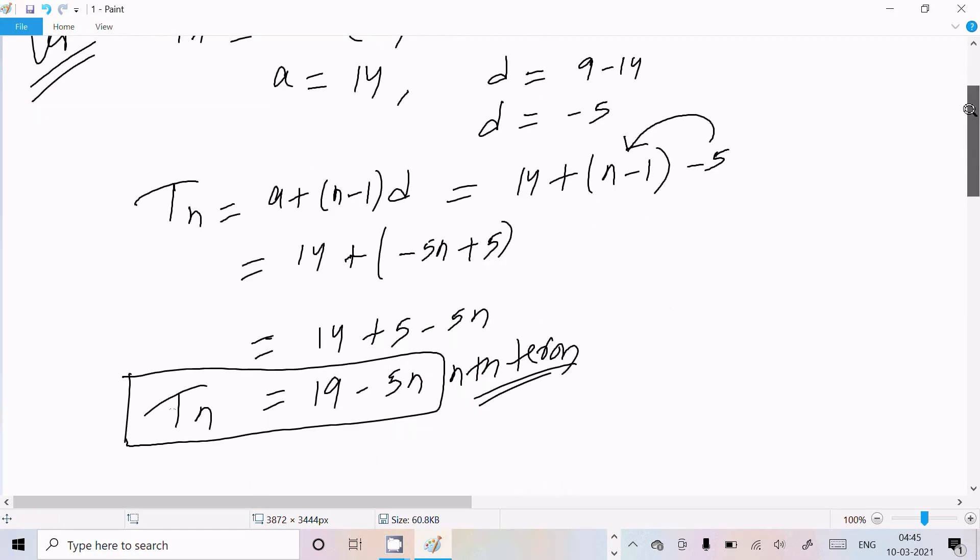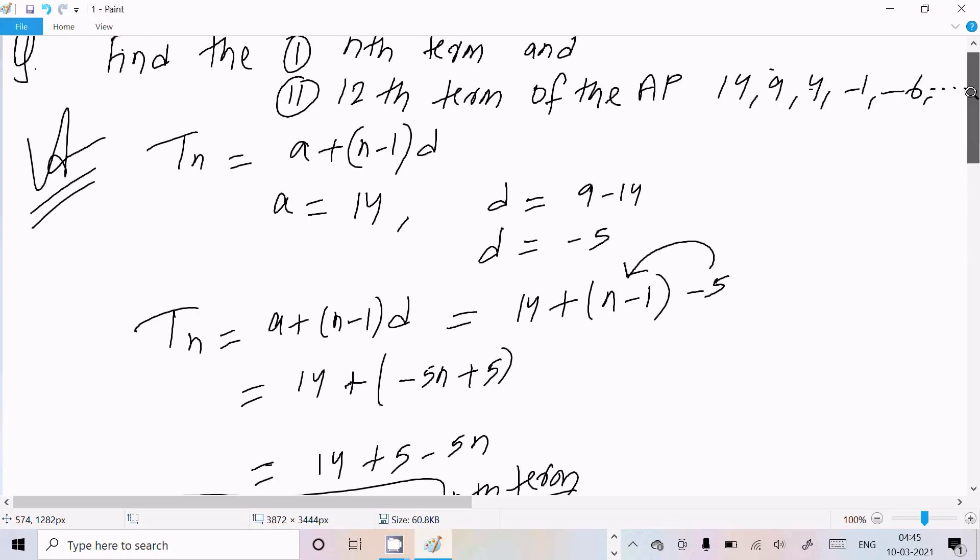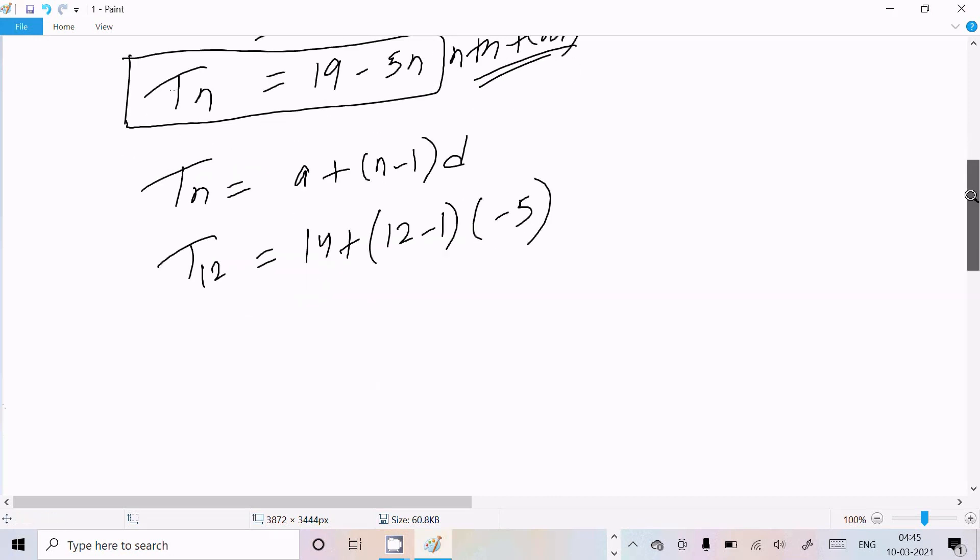So here nth term equal to a plus n minus 1 into d. So calculating 12, the first term is a equals 14, and here n is 12 minus 1, d is minus 5.